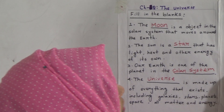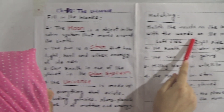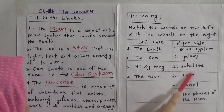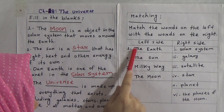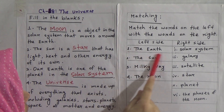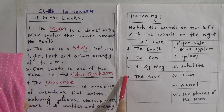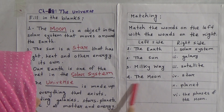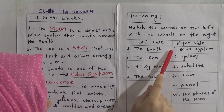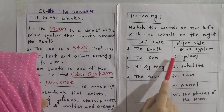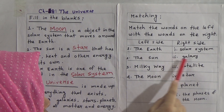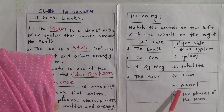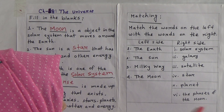Now we will solve the matching exercise. Match the words on the left side with the words on the right side. On the left side: number one — the Earth, number two — the Sun, number three — Milky Way, number four — the Moon. On the right side: number one — solar system, number two — galaxy, number three — satellite, number four — star, number five — planet, and number six — phases of the moon.